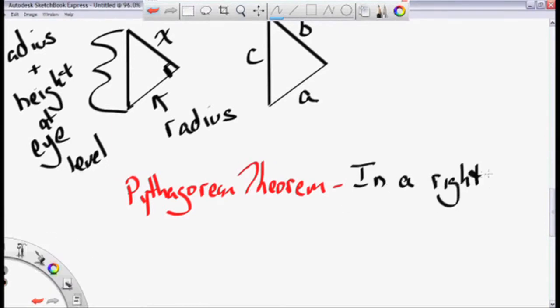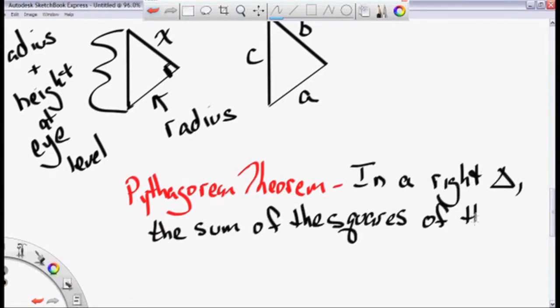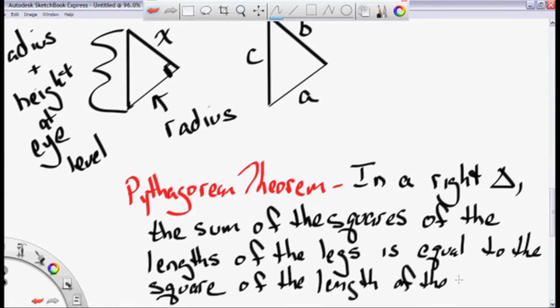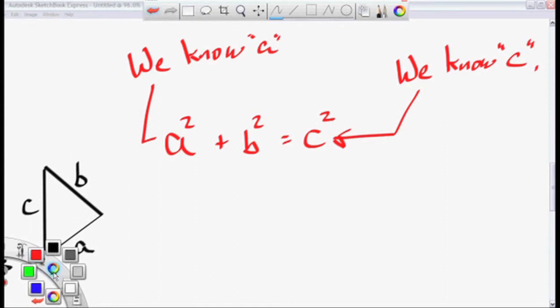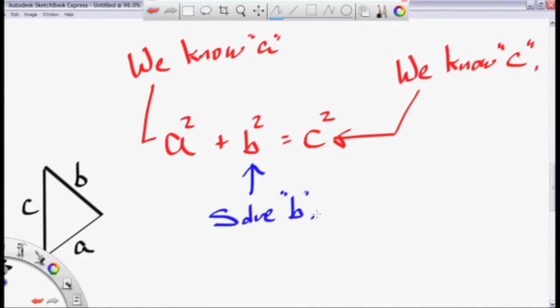So we're going to use the Pythagorean Theorem, which states in a right triangle the sum of the squares of the lengths of the legs is equal to the square of the length of the hypotenuse. A squared plus B squared equals C squared. We know A. We know C. What we need to find is B.